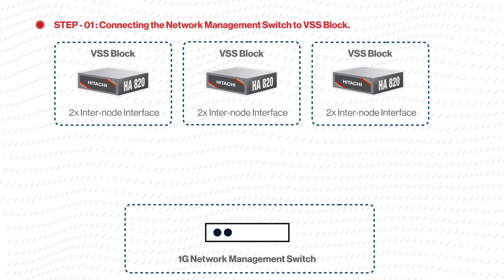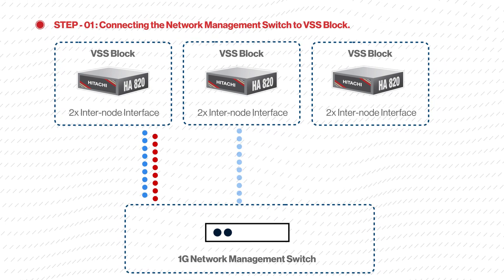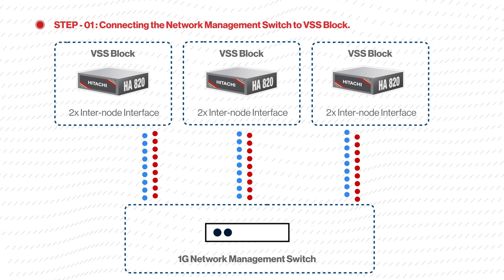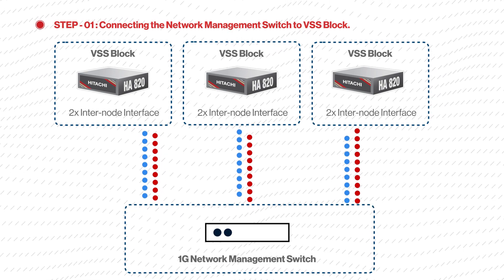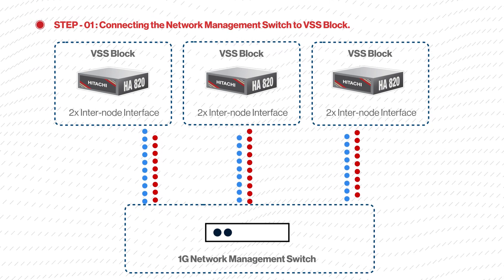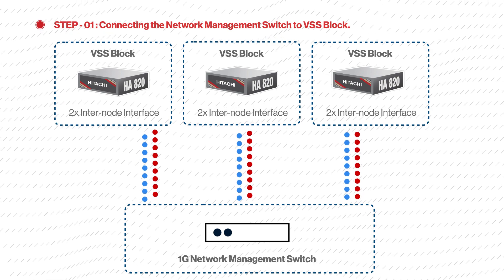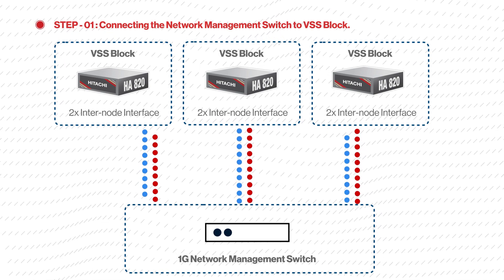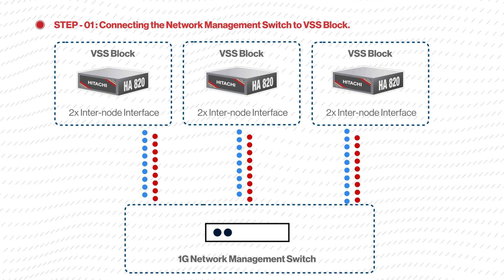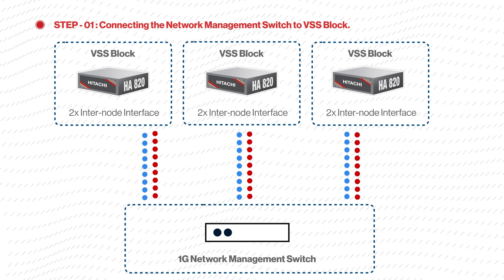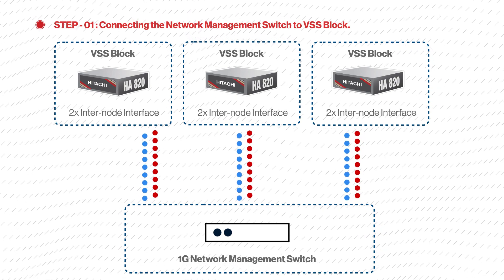Step 1: connecting the network management switch to VSS Block. First, we connect the VSS Block nodes to the network management switch by using either the 1GB or 10GB Ethernet connection that is marked as storage management network. Using this network, you can access the storage user interface.